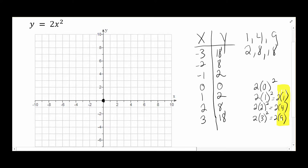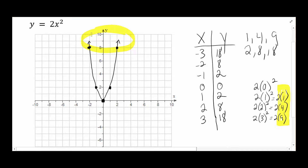Starting at the origin — no shifts in this problem — as I take my first step over, instead of going up by 1, I go up by 2. Next step, up by 8. Next step would be up by 18, but I don't have room. The parabola is more stretched out vertically, appearing skinnier. Picture someone grabbing the parabola and pulling it up — multiplying by 2 stretched it, giving the illusion of being skinnier.